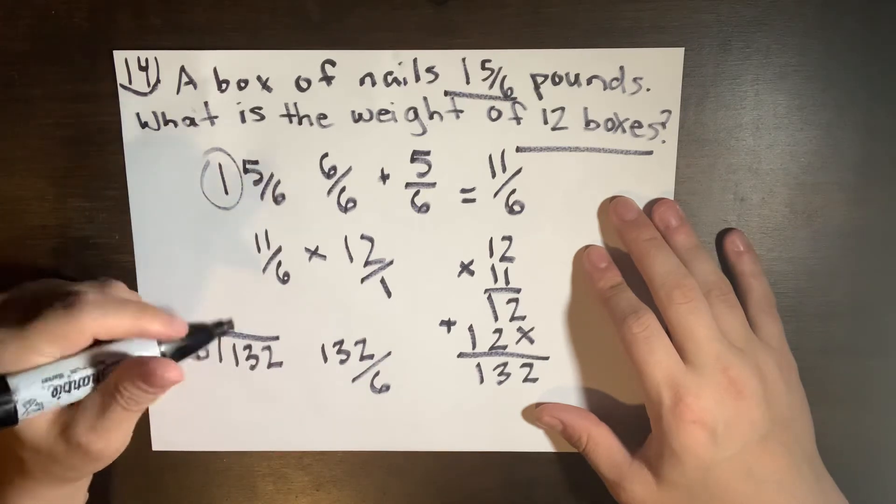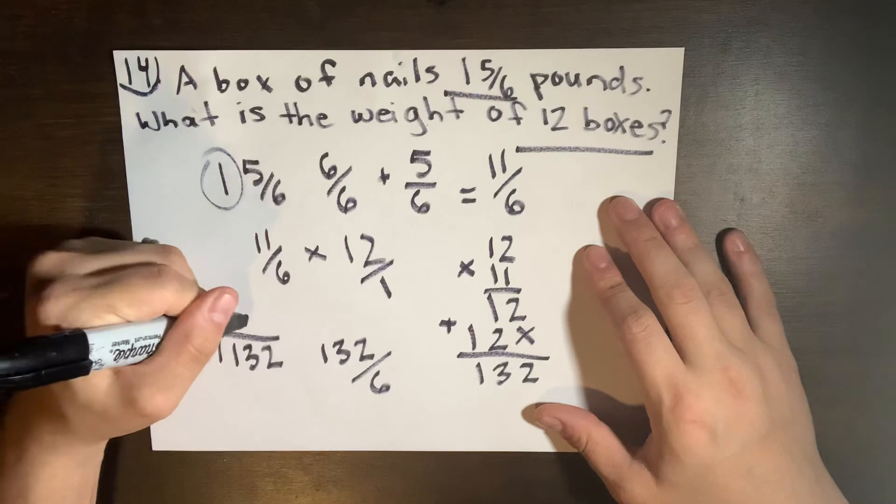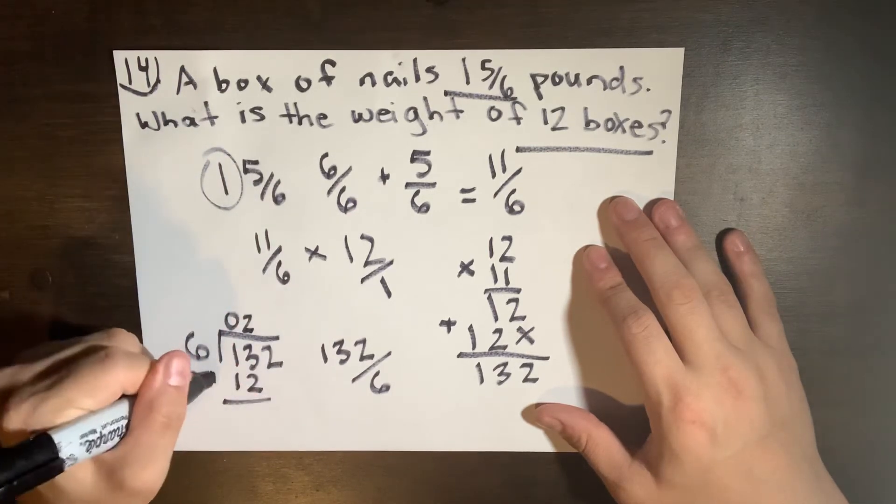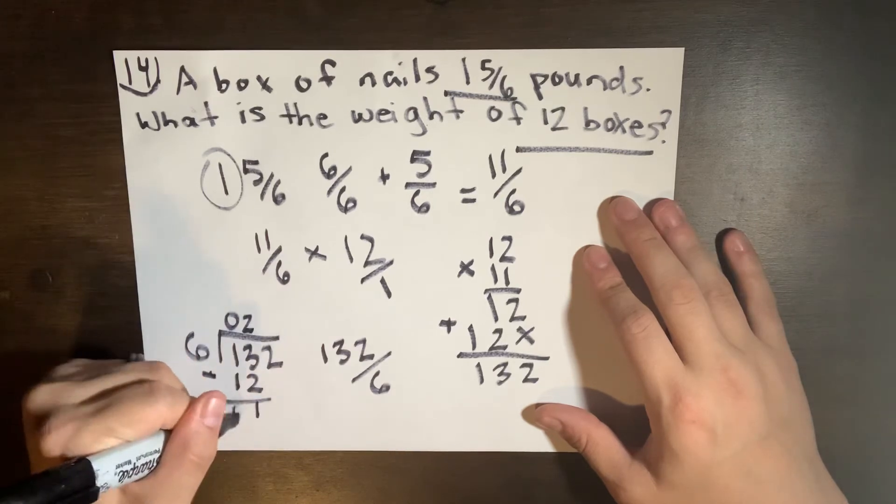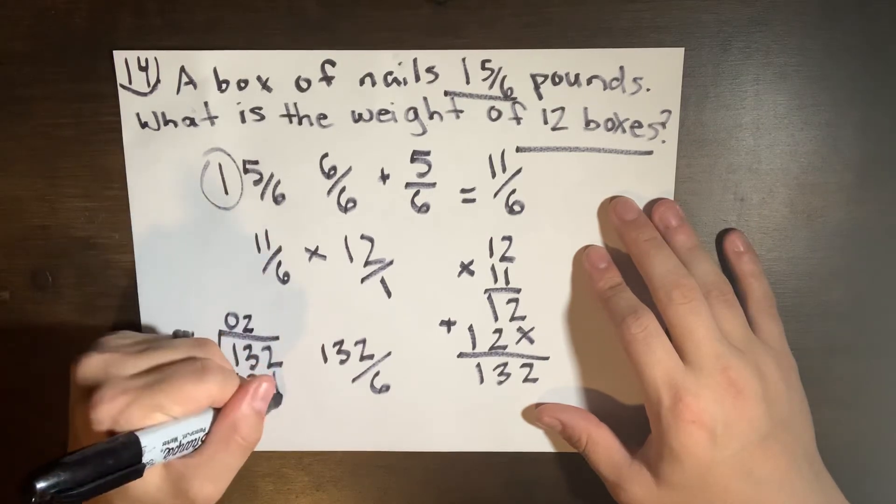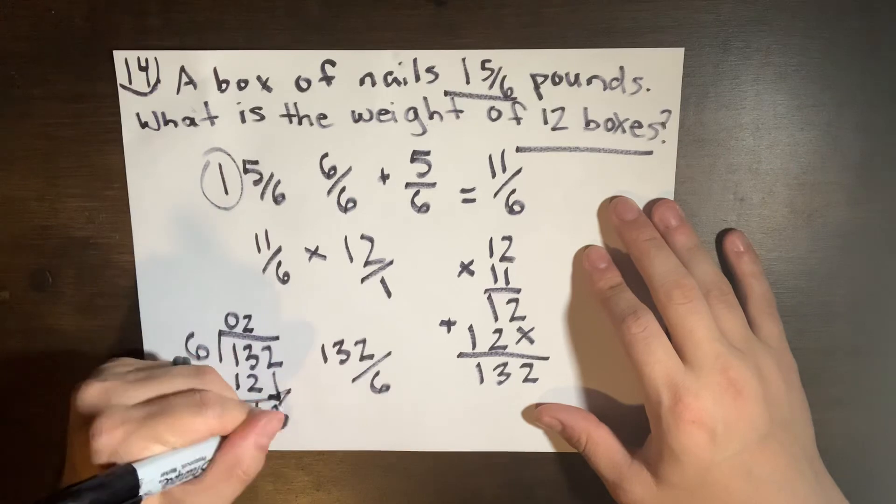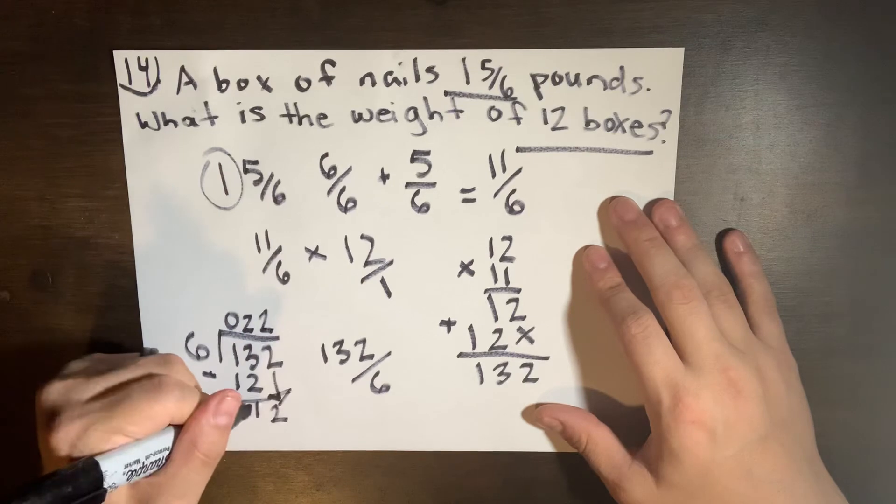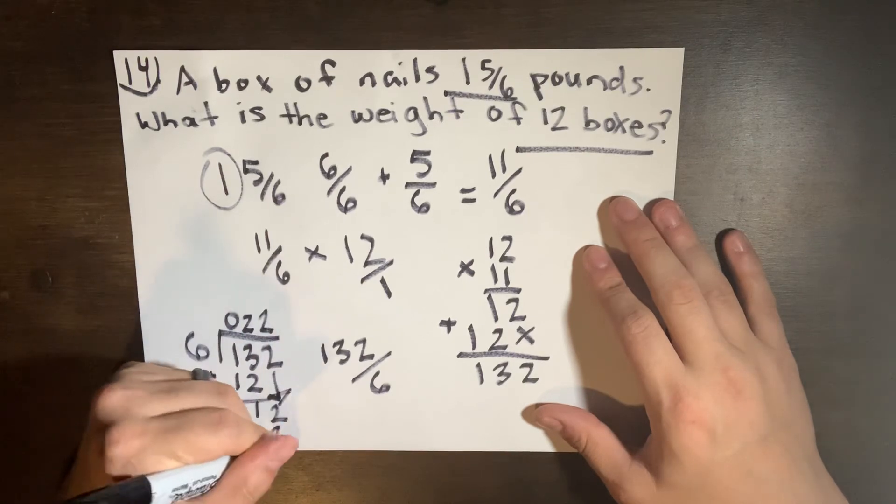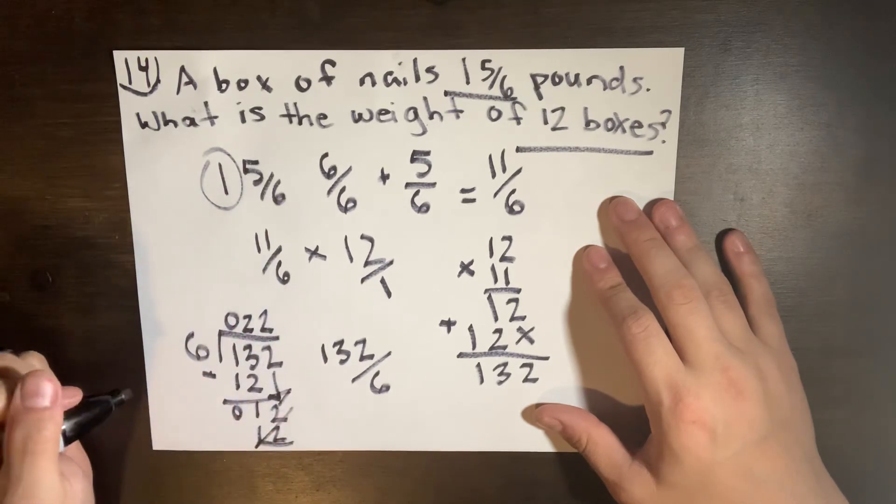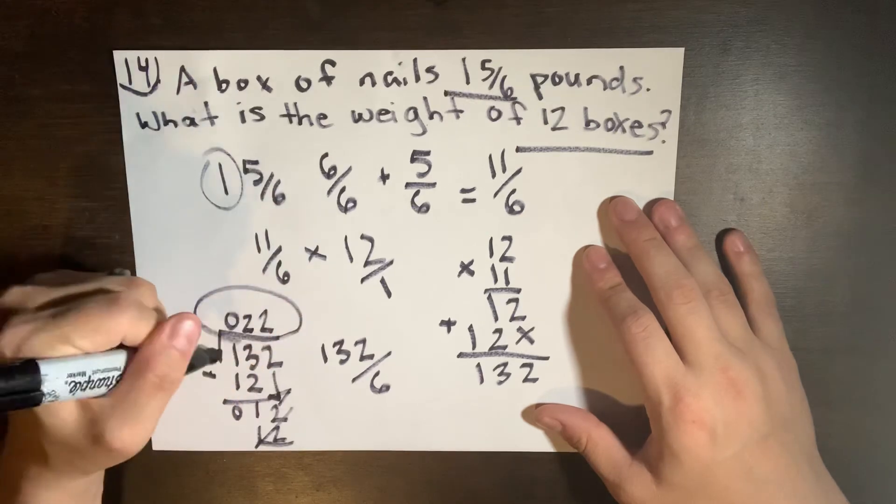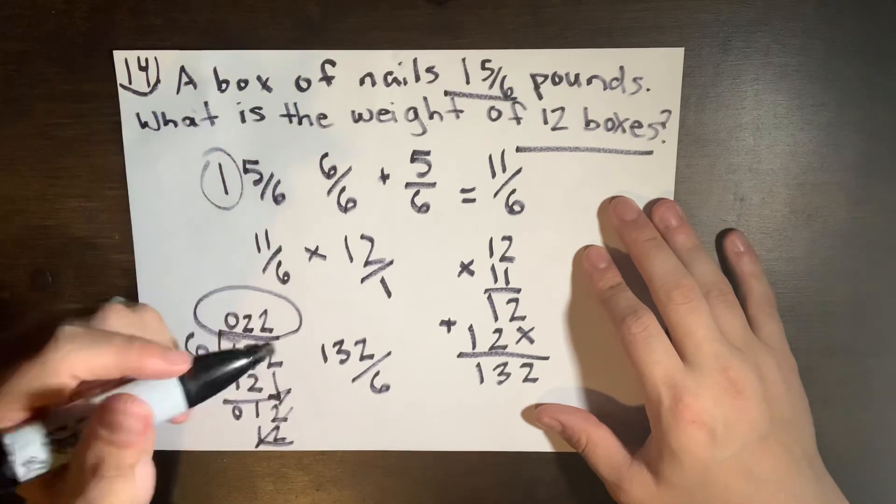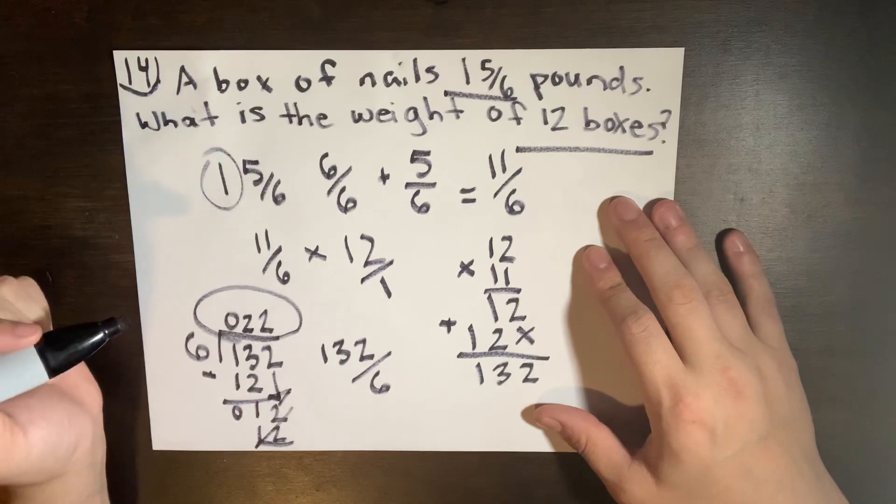Six can't go into one because it's too high of a number, so six can go into 13 however. It's going to be zero and it's going to be two, that'll be 12 minus 13, that'll leave one. Then we're going to carry this down, it's going to make 12. Six can go into 12 two times again, so 12 minus 12 is going to equal zero. So overall our answer is going to be 22. The weight of 12 boxes will be 22 pounds.